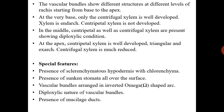The vascular bundle shows different structures at different levels along the rachis. Starting from the base to the apex: at the very basal region, only centrifugal xylem is well developed and xylem is endarch; centripetal xylem is not developed. In the middle region, both centripetal and centrifugal xylem are present, showing the diploxylicis condition. At the apex, centripetal xylem is well developed, triangular and exarch, while centrifugal xylem is much reduced.